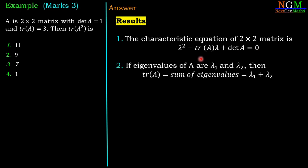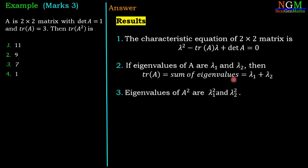The second result: if eigenvalues of A are λ₁ and λ₂, then trace of A is the sum of the eigenvalues, λ₁ + λ₂. The third result: if eigenvalues of A are λ₁ and λ₂, then eigenvalues of A² are λ₁² and λ₂².